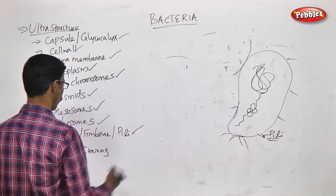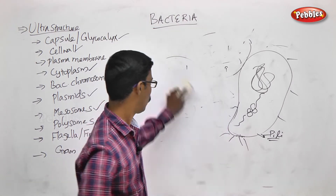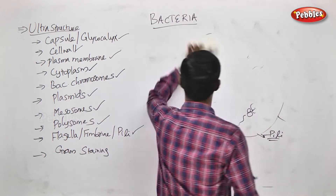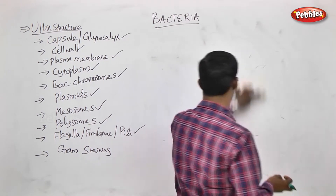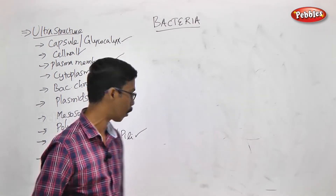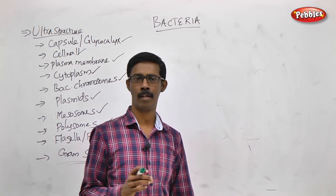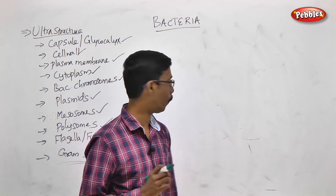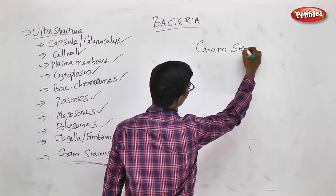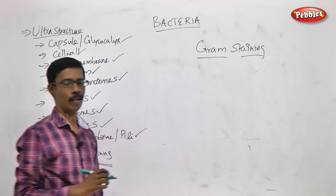Now we are looking at a bacterial ultra-structure, its basic functions. If we are looking at a prokaryote or bacteria, there is a very important staining technique called Gram staining.